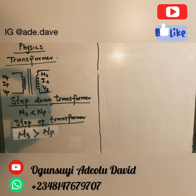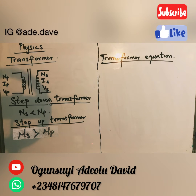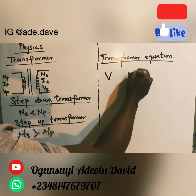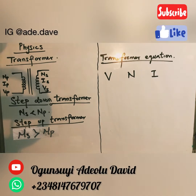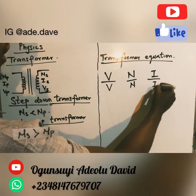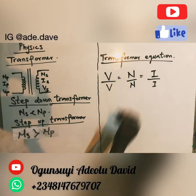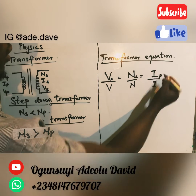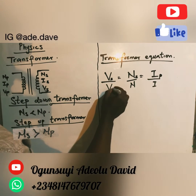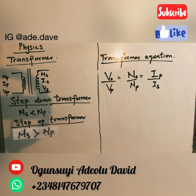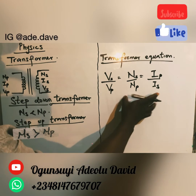I am going to give you the transformer equation. I have a short acronym so you don't forget the equation. I write V, N, I over V, N, I and put the equal sign. I can assign S, S, P on one side and P, P, S on the other — or P, P, S over S, S, P — whichever way you prefer. So there are three equations within this single expression.